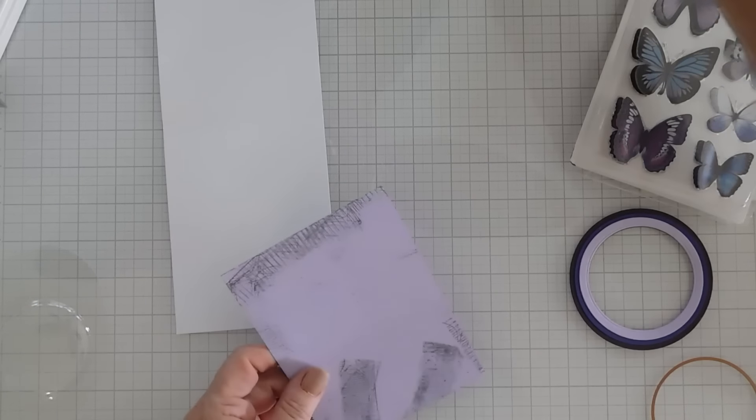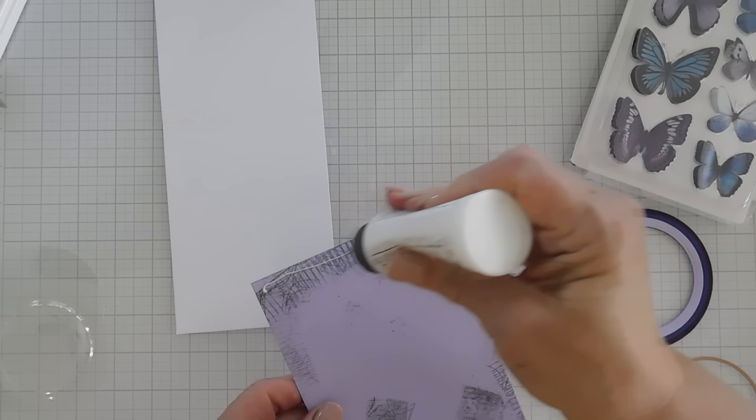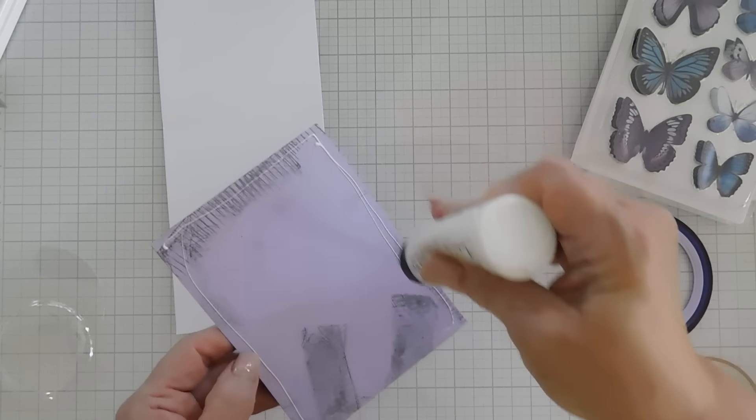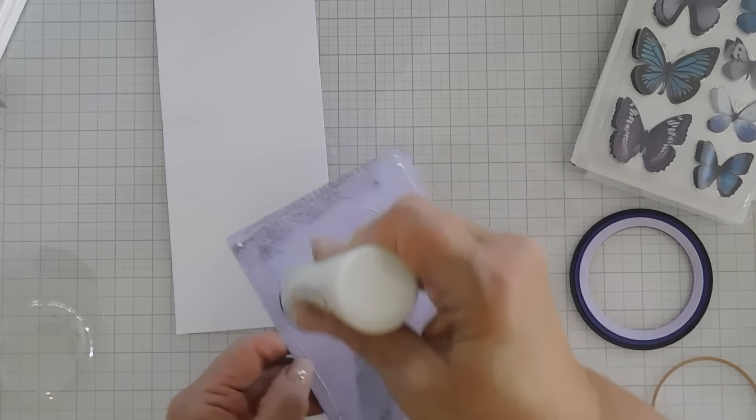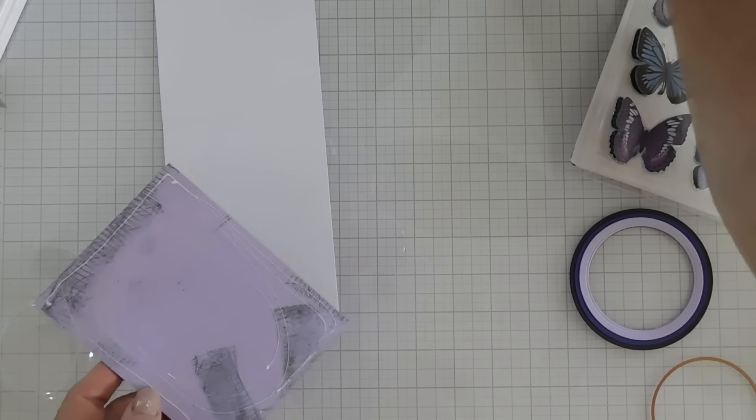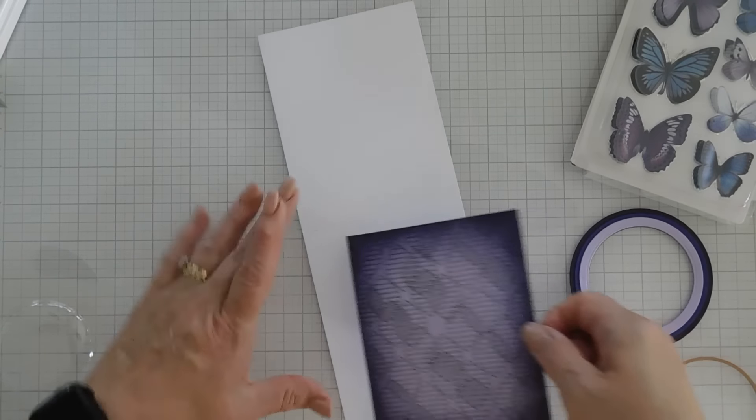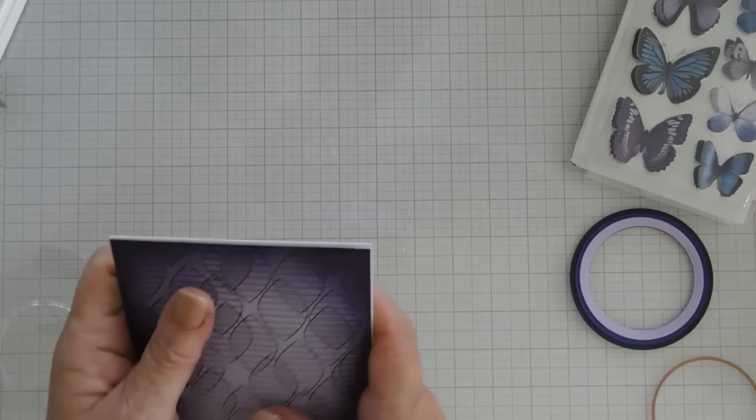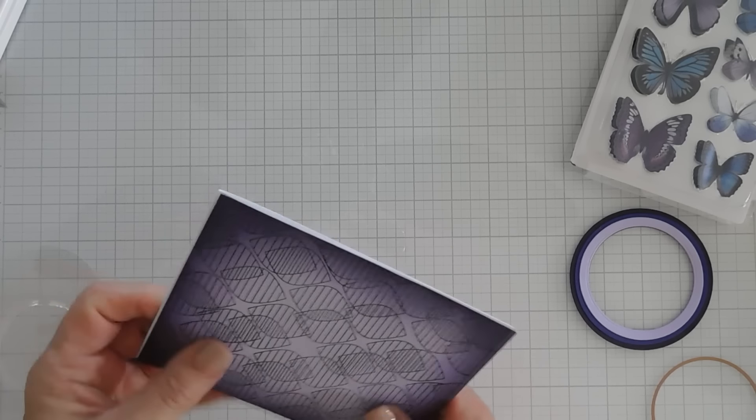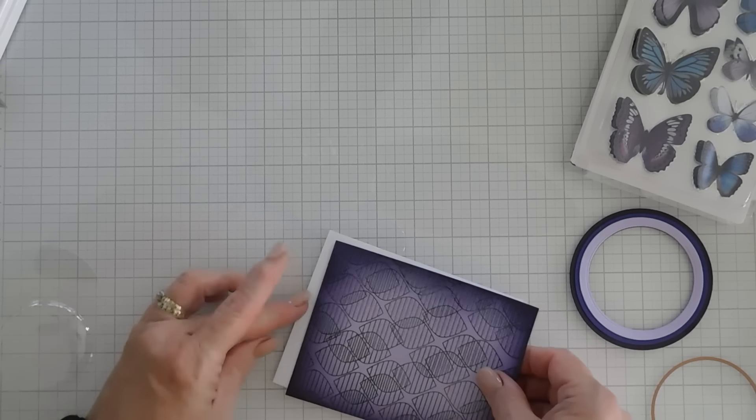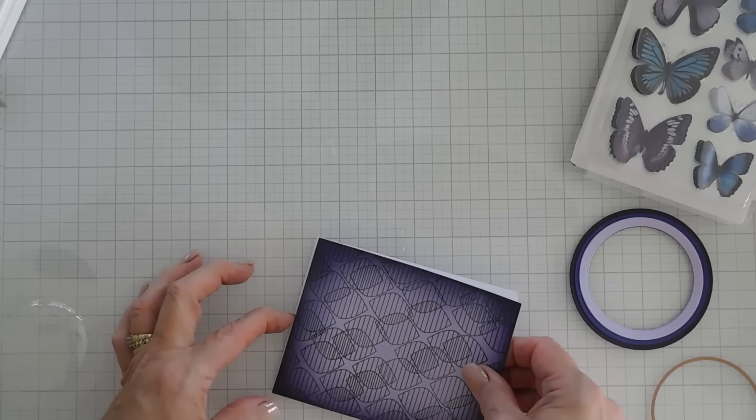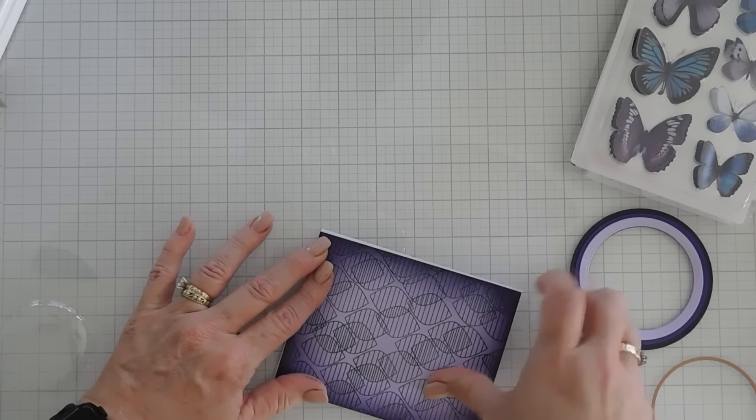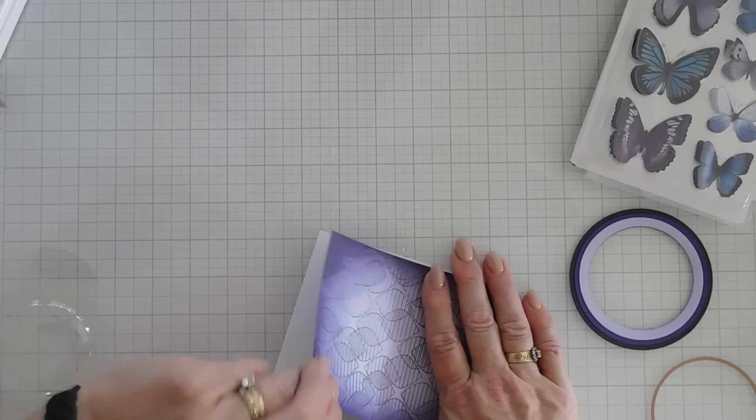I also die cut out a piece of acetate, not using this die but using a die that matched the size of this. I thought we'd make a see-through shaker. Okay, so we're going to put this to the side. And then we're going to create a window in this panel. Now what I'm going to do is take my card base and then I'm going to open it up.